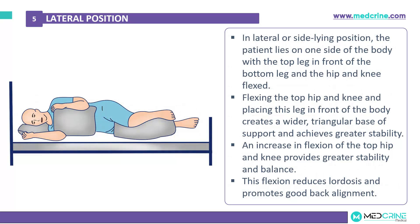Lateral position, or side-lying position, is where the patient lies on one side of the body with the top leg in front of the bottom leg and the hip and knees are flexed. Flexing the top hip and knee and placing the leg in front of the body creates a wider triangular base for support and achieves greater stability. This position reduces lordosis and promotes good back alignment, and an increase in flexion of the top hip and knees provides greater stability and balance.